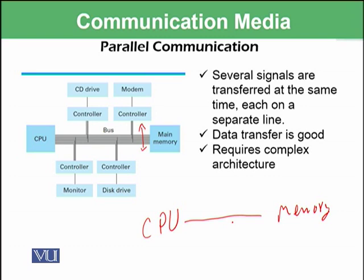Parallel communication means that you have parallel paths available. You can see there are many small paths available, and on those parallel paths data is transmitted efficiently. However, it requires complex architecture because you need to design multiple paths, not just one.